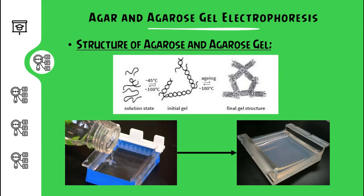Here we can see the structure of agarose and the final gel product. On the left side, the molecules of the gel are shown in a solution state, and at around 45 degrees Celsius the gel starts to solidify. After a period of time, the final gel structure is as shown on the right. A big advantage of agarose is that we could remelt the gel after it solidifies. Many times, the excess gel from one gel run could be used in the next.